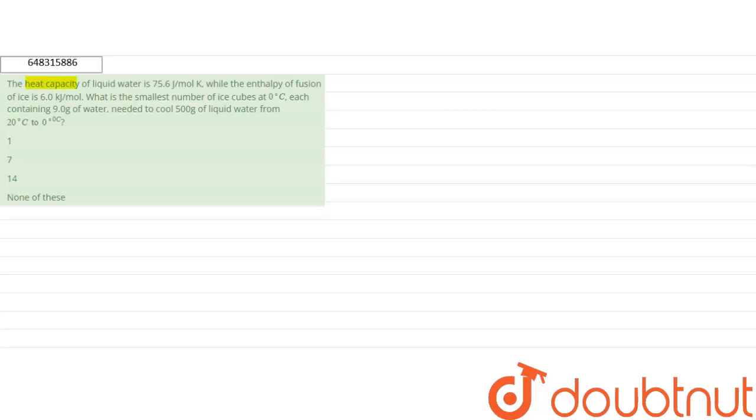question. Heat capacity of liquid water is 75.6 joule per mole. Enthalpy of fusion of ice is 6.0 kilojoule per mole. What is the smallest number of ice cubes at 0 degree Celsius,